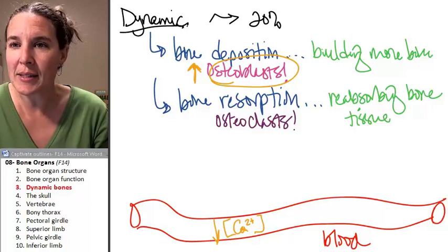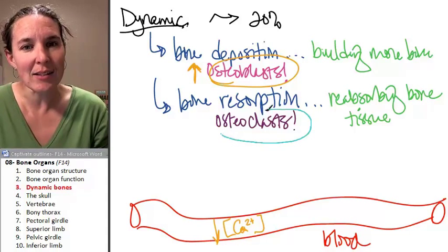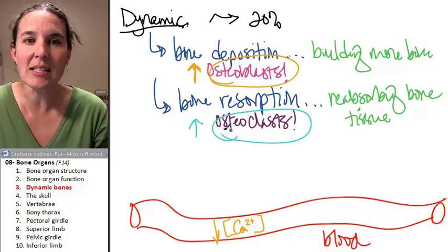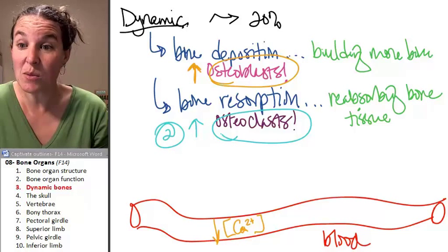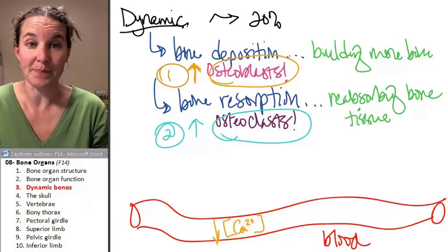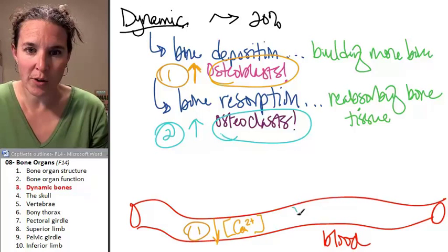What happens if osteoclasts are active? This is scenario number two. Here's scenario two. This one was scenario number one. Now we're at scenario number two.